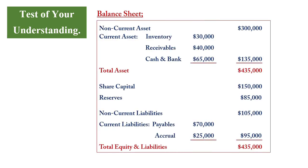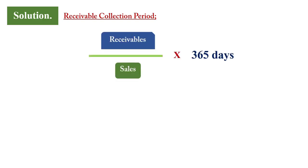From the balance sheet: non-current assets are $300,000. Current assets total $110,000, made up of inventory, receivables, and cash and bank. Current liabilities, comprising payables and accruals, total $95,000. For the solution, starting with the receivables collection period — the formula is receivables divided by sales multiplied by 365 days — this gives us 97 days, calculated as $40,000 (receivables) divided by $150,000 (sales) multiplied by 365.